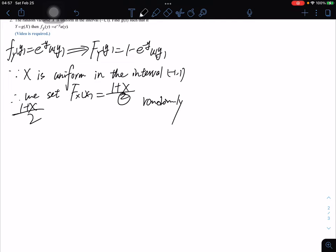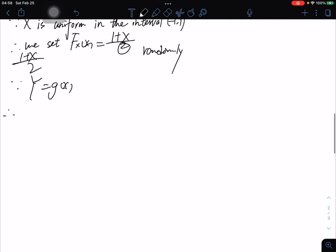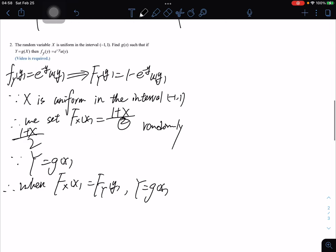Since Y equals g(x), when F_X(x) equals F_Y(y), Y equals g(x), right? We have the two functions, and Y equals g(x).